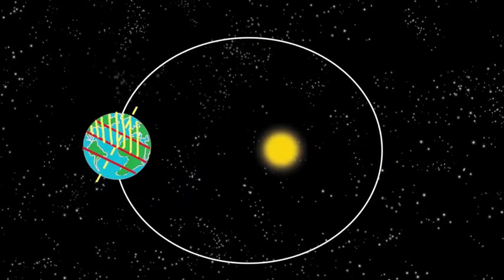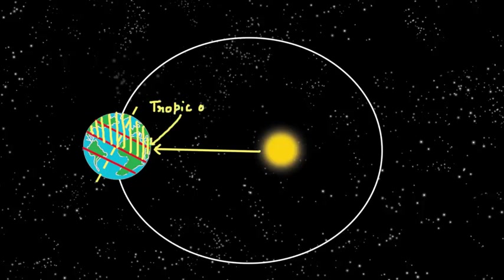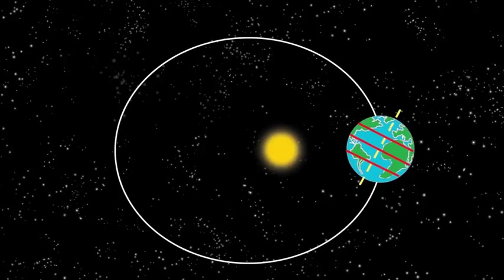We saw that while people in Northern Hemisphere enjoy summers in July when the sun is directly overhead at Tropic of Cancer, people in the Southern Hemisphere enjoy summers in December when the sun is directly overhead at the Tropic of Capricorn.